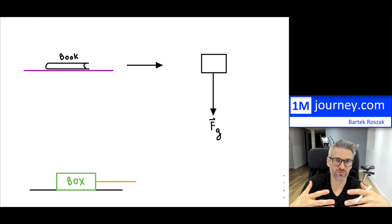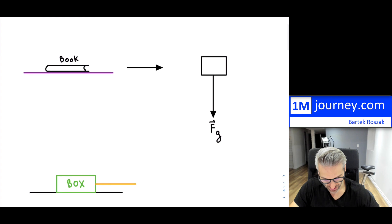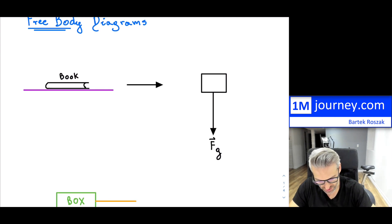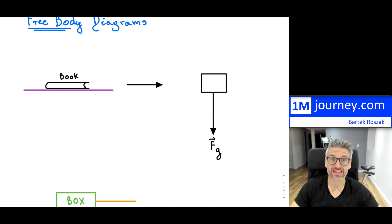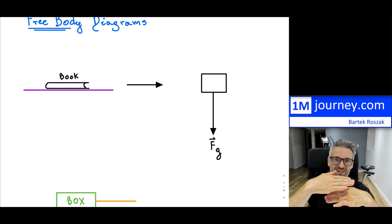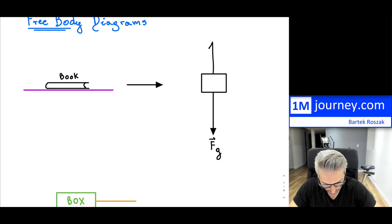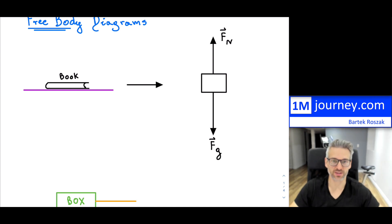The internal components of the table resist the book; all the little atoms are pushing back. Anytime you have contact between one object and another, the object is not falling through — so there's going to be a force called the normal force. That normal force typically counteracts gravity, and since we're assuming the book is at rest, these two forces counteract each other so it's not actually moving up or down.